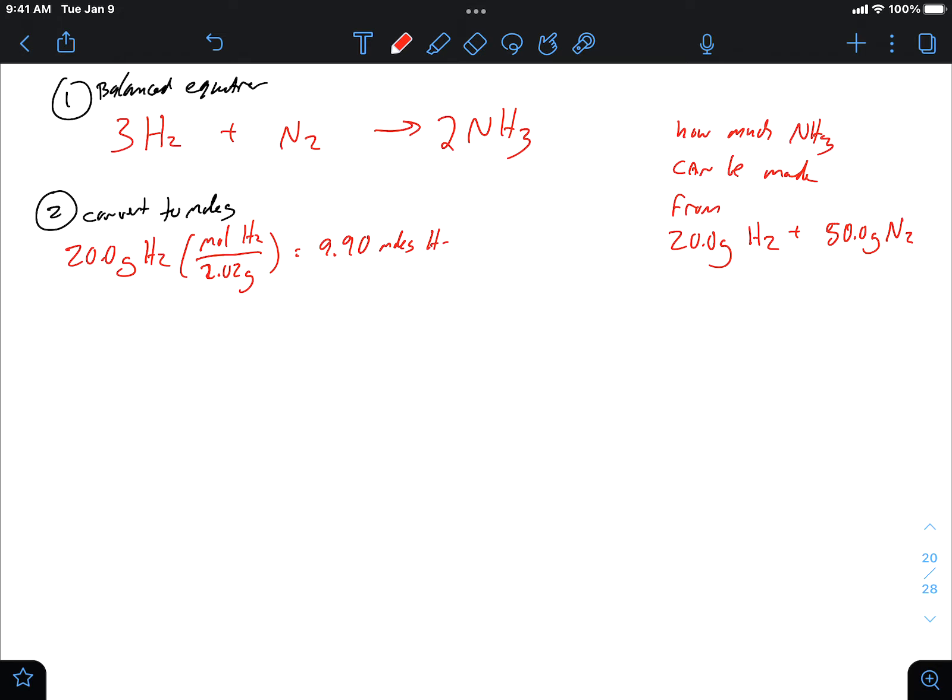So 9.90 moles of H2. Okay. My other reactant is nitrogen. A mole of nitrogen is also diatomic, so 14.01 times 2 is 28.02 grams. 1.78 moles of N2. That is my second step. I converted to moles.